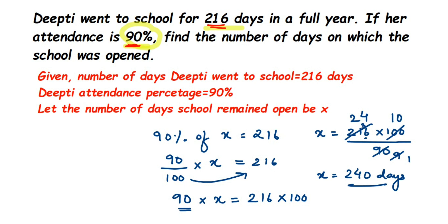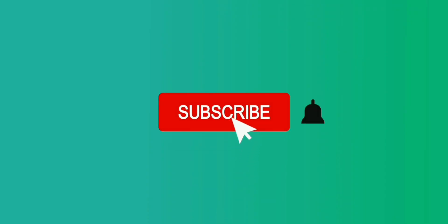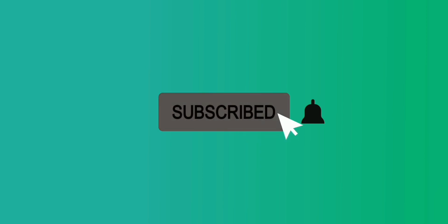So x is 240 days — that is, the total number of days the school was open is 240. Out of these 240 days, Deepti went 216 days to school, which is 90%. This is how you frame it, and once you know how to frame the equation you can solve it. In case you have further questions on this chapter, you can drop a comment. Thank you so much for watching.